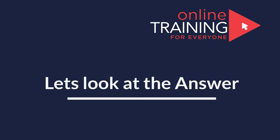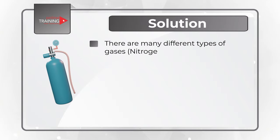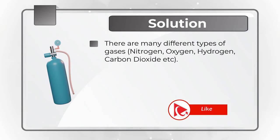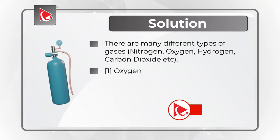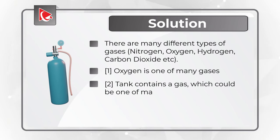Question is definitely worded very tricky, but the answer is very obvious. Let's look into details. Obviously, there are many different types of gases. For example, nitrogen, oxygen, hydrogen, carbon dioxide, and a lot of others. Oxygen is just one of many gases, which is clearly indicated in statement 1. And tank contains a gas, which could be one of many gases, which is shown in statement 2.